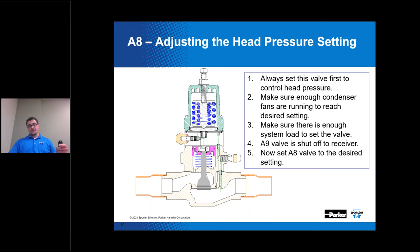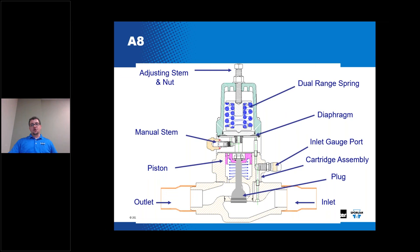Regarding rebuilding or servicing the A8: note the location of the gauge port. Years ago we relocated the gauge port from the cartridge assembly to the valve body. If you're ever replacing the cartridge on an old A8, you'll lose your gauge port because the new cartridge assembly doesn't contain one. Be aware that you'll need to install your own pressure tap in order to get the valve set after replacing that cartridge assembly.